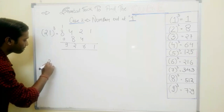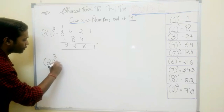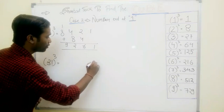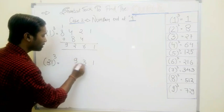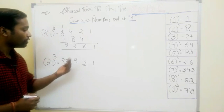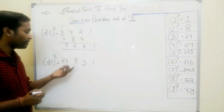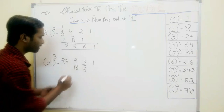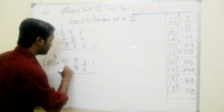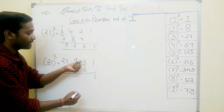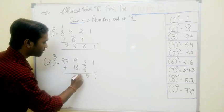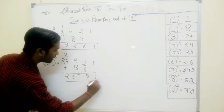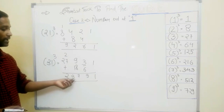Take another example: 31 cubed. Same pattern. Write these two numbers from the right-hand side: 1, 3. Square this number — that is 9 — and cube this number — that is 27. Leave the extreme right and extreme left and double: 3 gives 6, 9 doubled is 18. Simply add: 1, 6 and 3 is 9; 18 and 9 is 27, carry 2; 27 plus 2 is 29. So our answer is 29791.